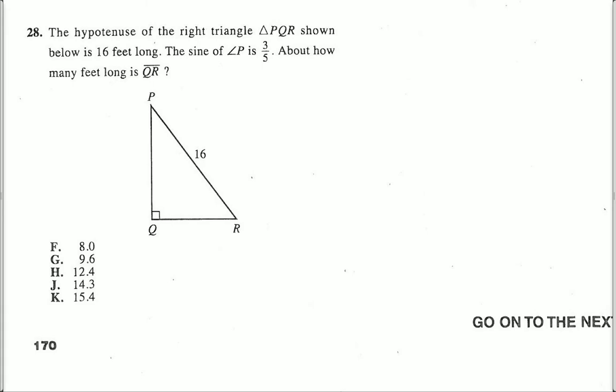Number 28. The hypotenuse of the right triangle PQR shown below is 16 feet long. The sine of angle P is 3 fifths. About how many feet long is QR?